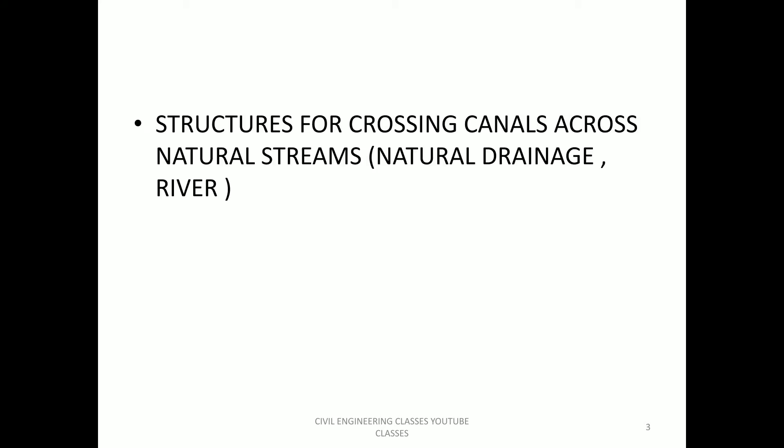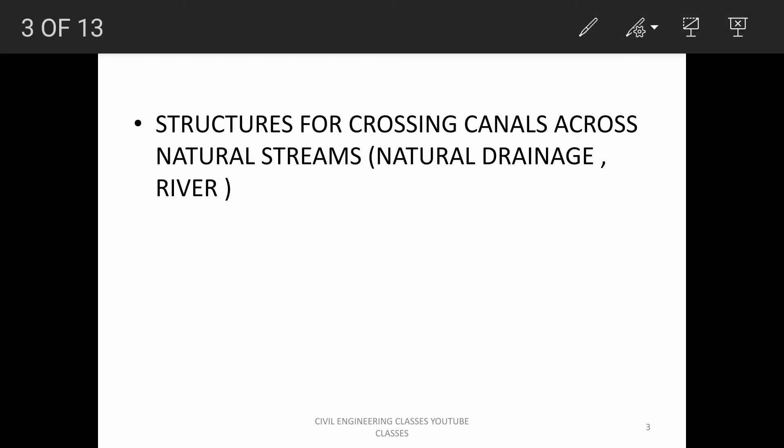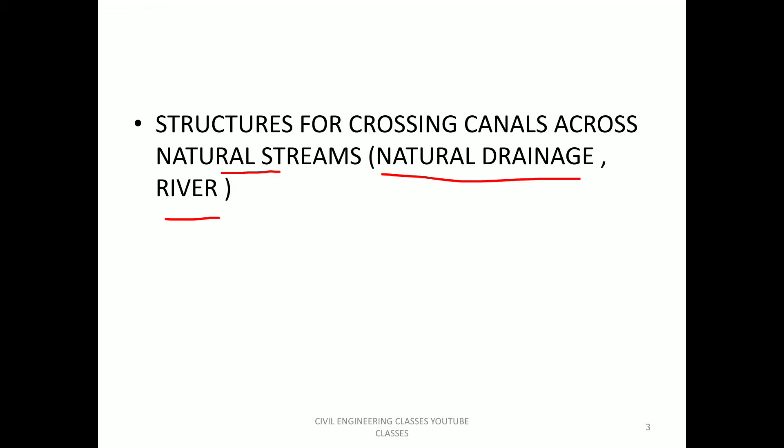Cross drainage structures are structures for crossing the canal across the natural stream — that is the natural drainage river. The canal is the man-made stream, and this is the crossing situation between the two.